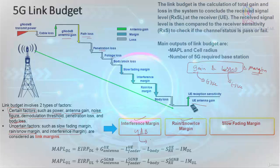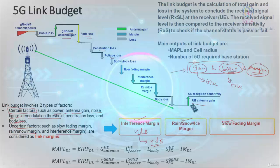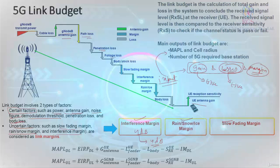That uncertain value is considered as a margin, because we know there is going to be interference in a region or rain fading in a region, so we already account for that factor. The main output we get by considering all the gains, losses, and margins in the network is the MAPL — Maximum Allowable Path Loss.